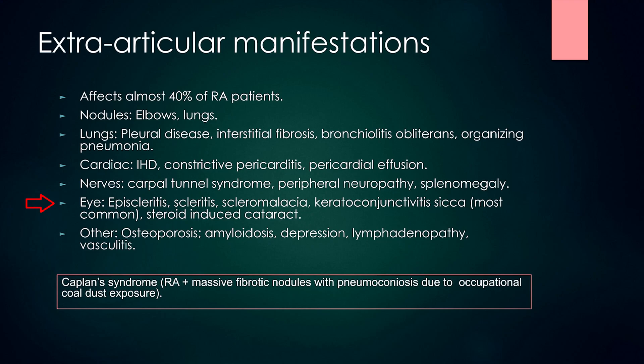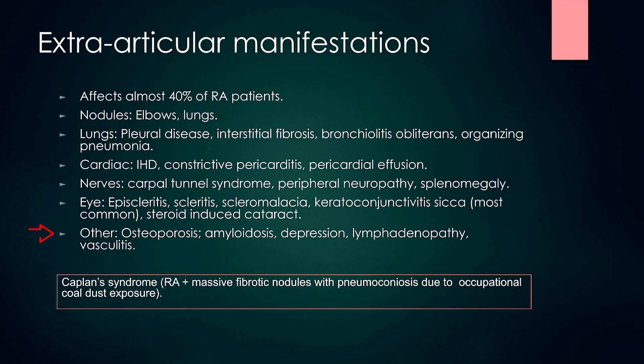In the eye, RA causes episcleritis, scleritis, scleromalacia, and keratoconjunctivitis sicca — which is the most common manifestation — as well as steroid-induced cataract, because many chronic RA patients take steroids long-term. They can also develop all the side effects of steroids, including Cushing's syndrome. Other manifestations include osteoporosis, amyloidosis, depression, lymphadenopathy and vasculitis.